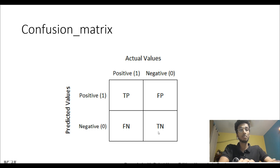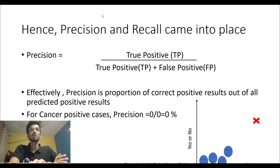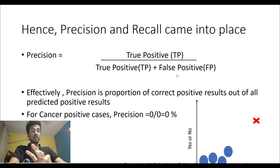Now that we've established accuracy is not reliable, what do we depend upon? We have created new definitions specifically for this issue called precision and recall. Precision is your true positive divided by true positive plus false positive. People get confused by the formula — just understand the meaning: precision is the proportion of correct positive results out of all predicted positive results.